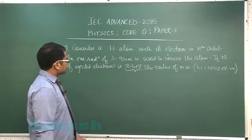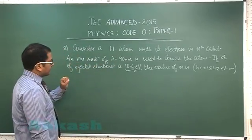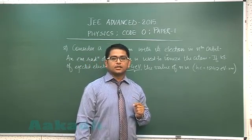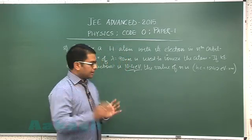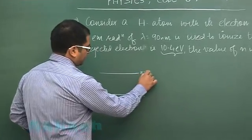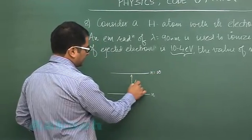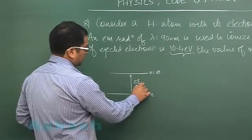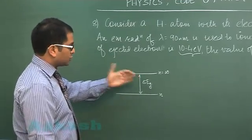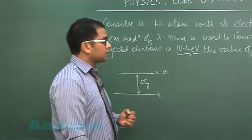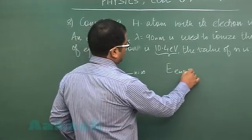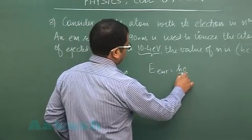Now the point is, we've got to see one thing: the question says the ionized electron has kinetic energy. So quite obviously, whatever is the original value of n, this is n equals infinity, and this is the energy gap. Now the energy given by the electromagnetic radiation is greater than the energy gap, so that the excess energy comes in the form of kinetic energy. So let's try to find the energy of the electromagnetic radiation. That would be hc by lambda.